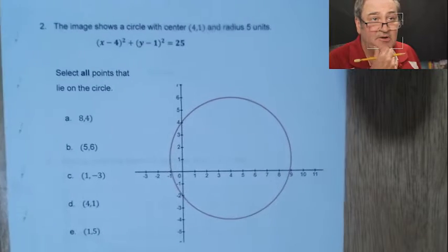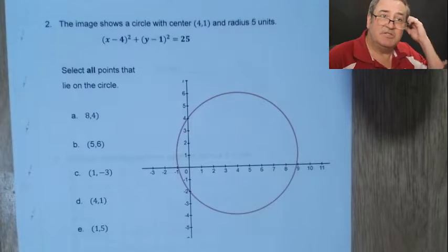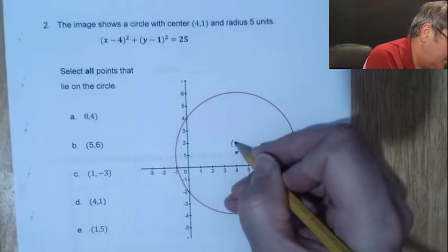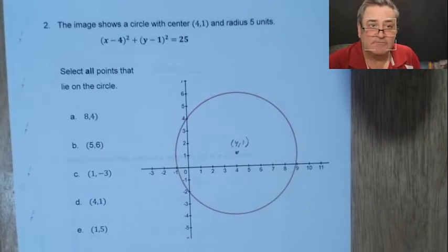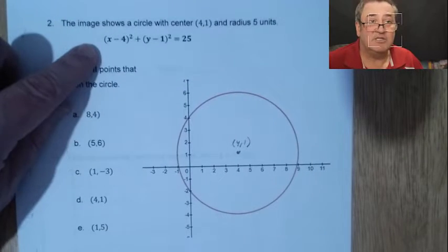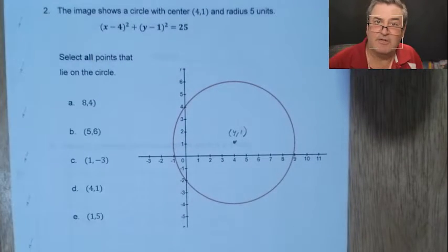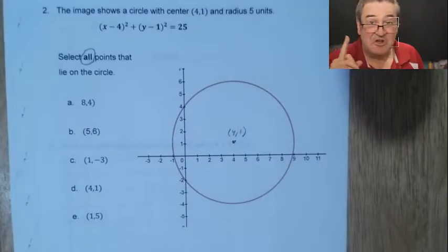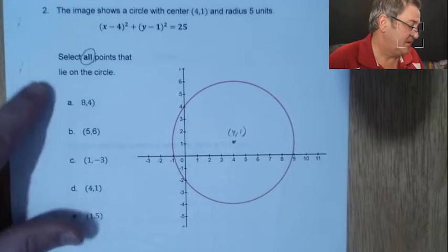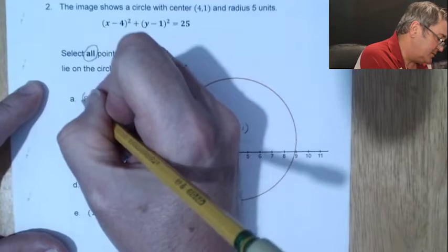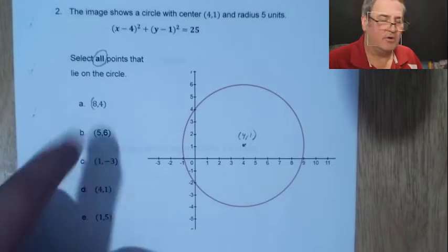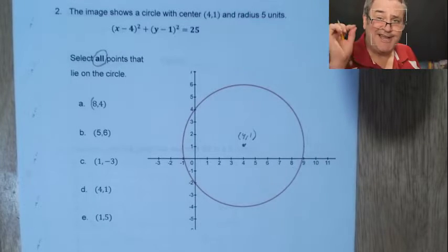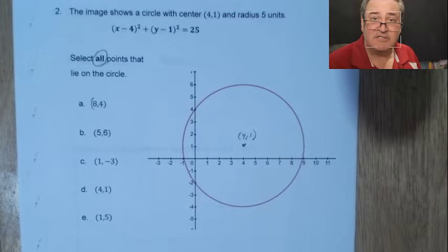Now let's look at this image of a circle. The circle has center (4, 1) and a radius of 5 units — you can see it extends 5 in every direction. The equation is given because it's very useful. The question says 'select all points that lie on the circle,' so again, probably more than one. For point (8, 4): we don't just eyeball it — we're mathematicians and we use the equation.